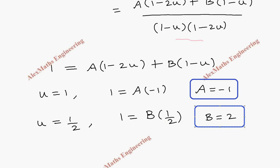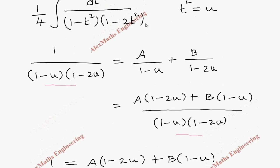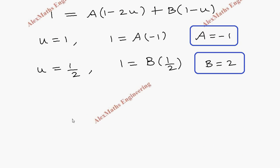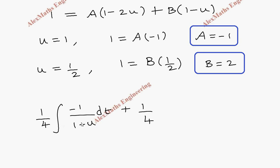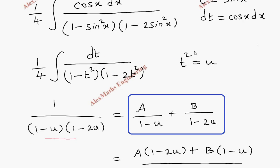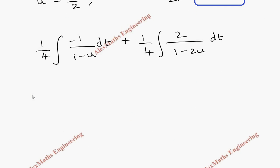After getting the values of A and B, we substitute back where we applied partial fractions. With the 1/4 factor outside, this becomes: (1/4) integral of A/(1 - u) dt plus (1/4) integral of B/(1 - 2u) dt. Since the integration is with respect to t, we replace u with t². This gives: (-1/4) integral of dt/(1 - t²) plus (1/4) integral of 2·dt/(1 - 2t²), which simplifies to (1/2) integral of dt/(1 - 2t²).